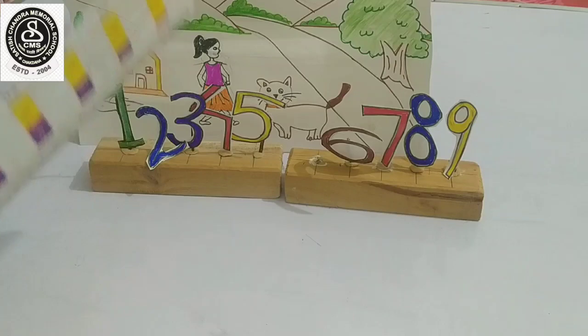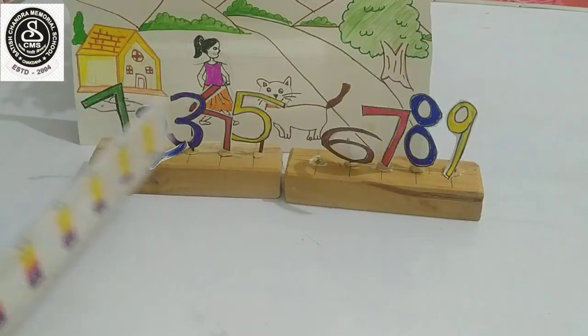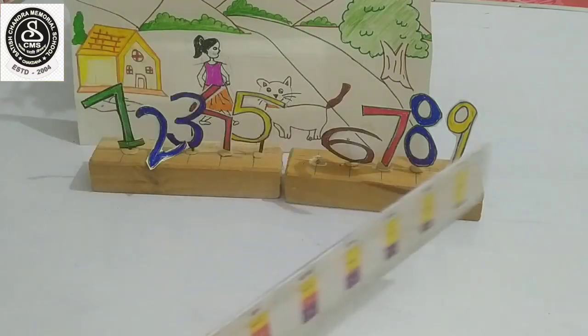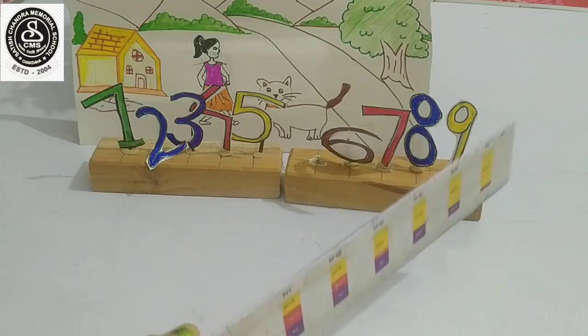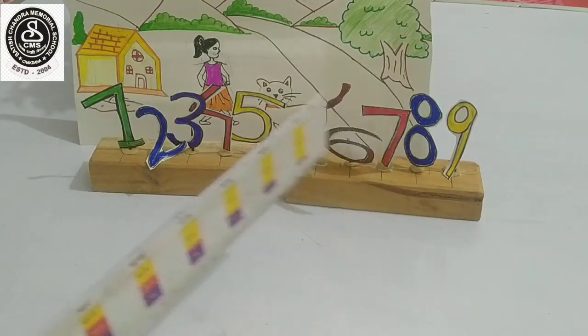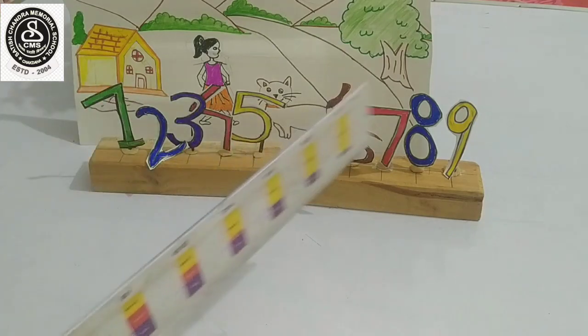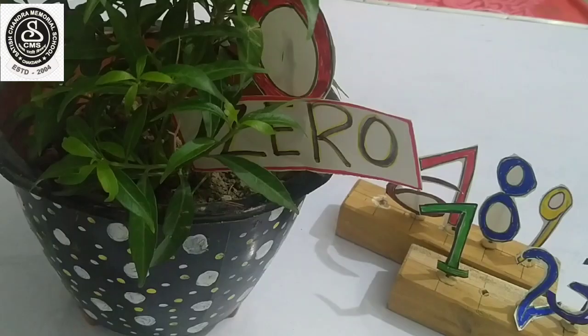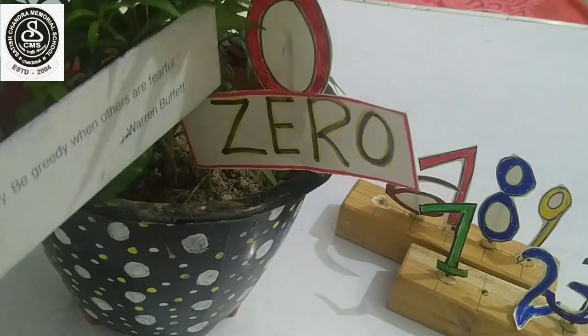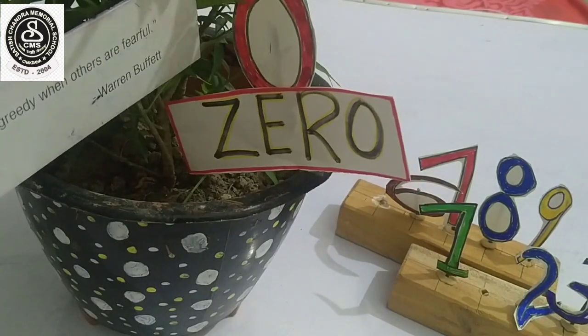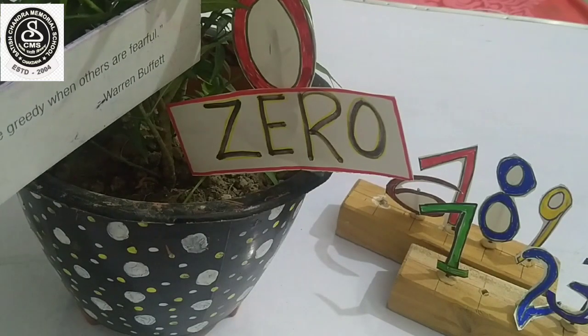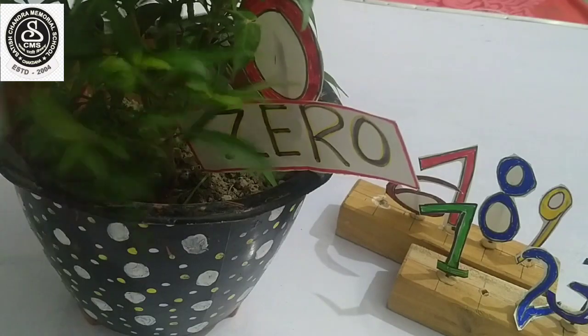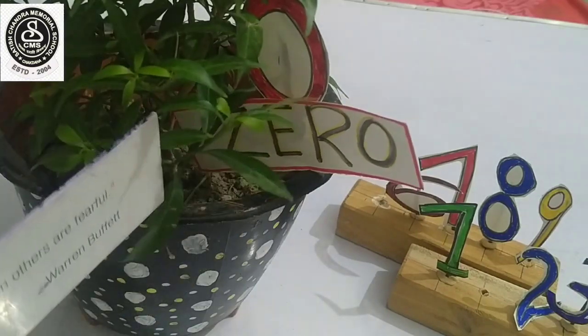The teacher ordered the numbers to find zero. All the numbers searched for zero but they could not find him. At last all the numbers found that zero is hiding behind the tree. Can you see zero is hiding behind the tree?